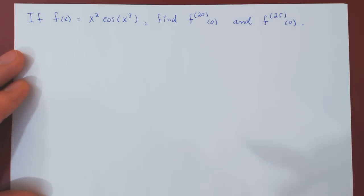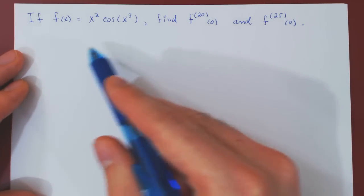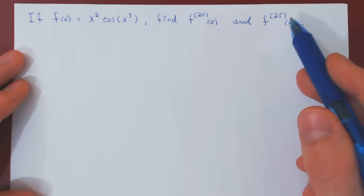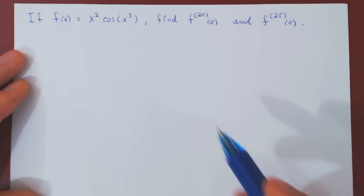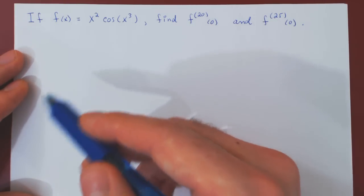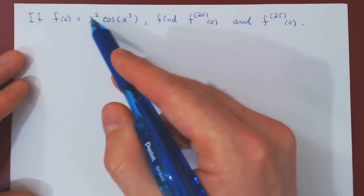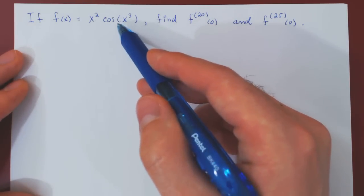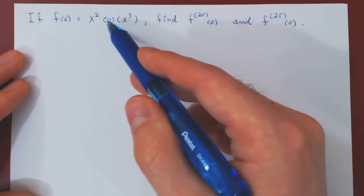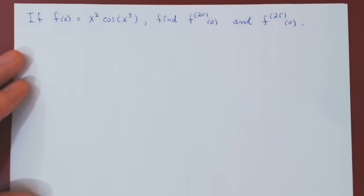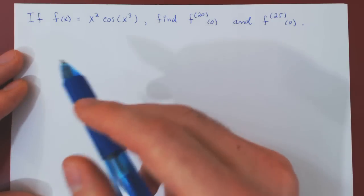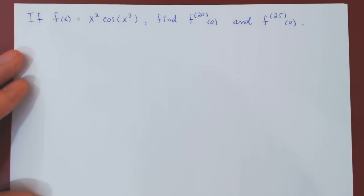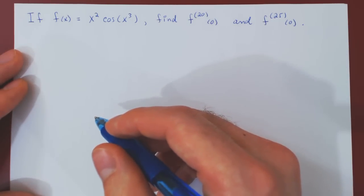Of course, if we're naive here, we differentiate this function 25 times, and then we can evaluate the 20th derivative and the 25th derivative at 0. But this will require a lot of work. Every time we'll have to use the product rule and the chain rule, and as we take derivatives, the function will grow in complexity. Start differentiating f a few times, and you will see that the derivatives become rather complicated.